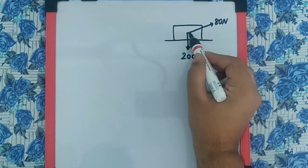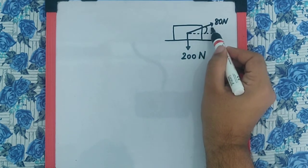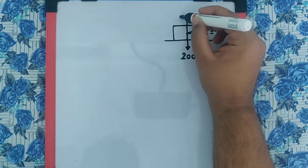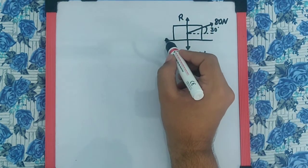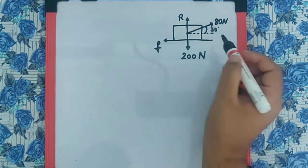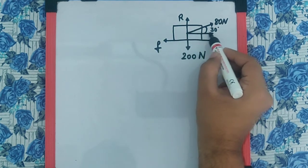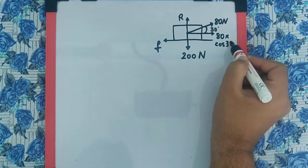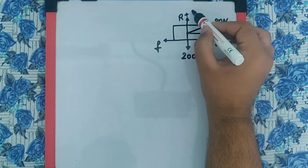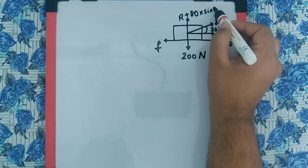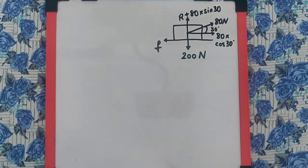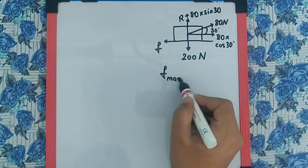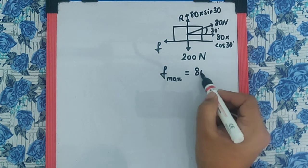The applied force of 80 Newton makes an angle of 30 degrees, so there is a normal reaction R. There has to be friction on the left hand side to oppose the horizontal component of 80 Newton, which is 80 cos 30. There is also a vertical component acting upwards, which is 80 sine 30.